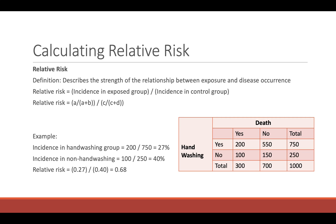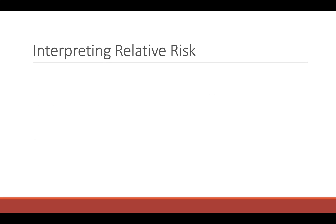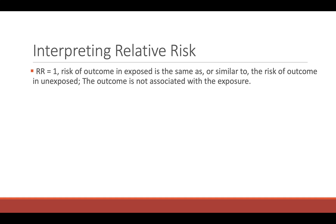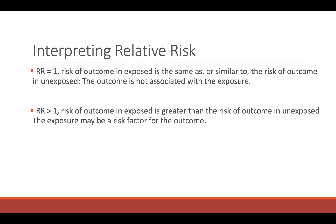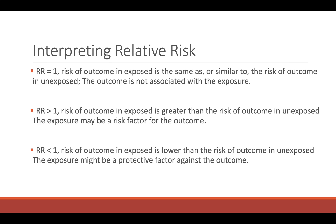Just like with our odds ratio, what do we do with this number? This slide is almost identical to the interpreting odds ratio slide. If the relative risk equals 1, the risk of outcome in the exposed is the same as in the unexposed — the outcome is not associated with the exposure. If relative risk is greater than 1, the risk of the outcome in the exposed is greater, meaning the exposure may be a risk factor. If less than 1, the risk in the exposed is lower, so the exposure might be a protective factor. The key difference from odds ratio: in relative risk we look at risk of outcome; in odds ratio, we look at odds.